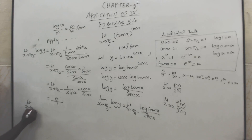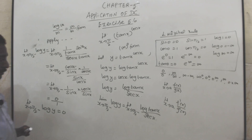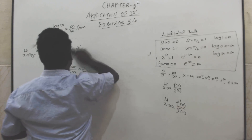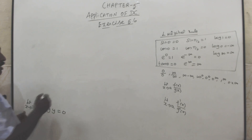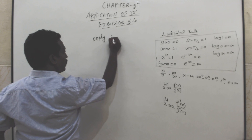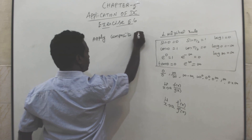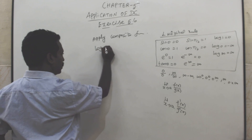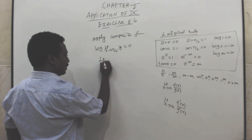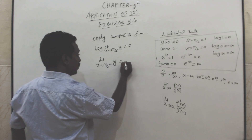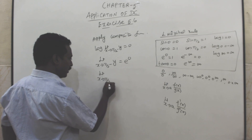Now limit x tends to π/2 minus: log y equals 0. Apply the composite function theorem — log is taken out — so limit x tends to π/2 minus of y equals e to the power 0. Since e^0 = 1, the limit x tends to π/2 minus of y equals 1.